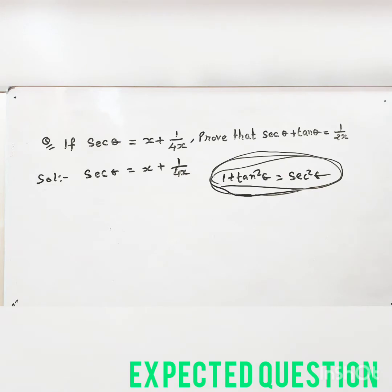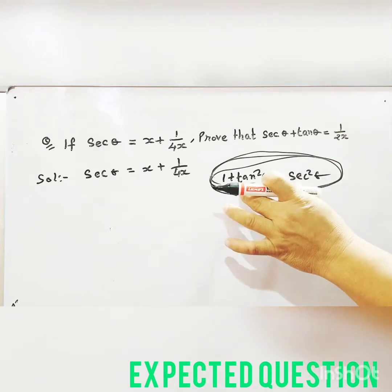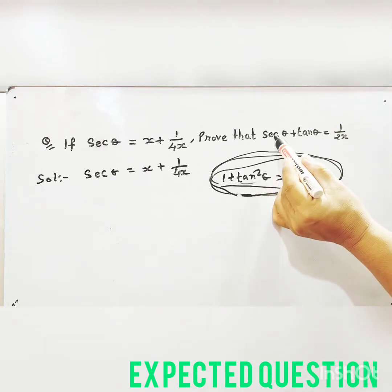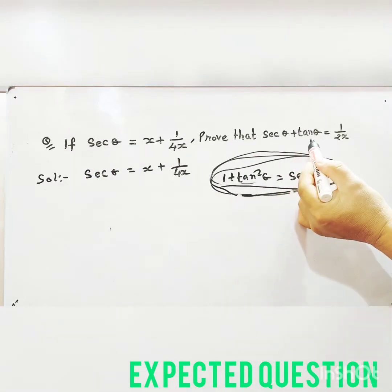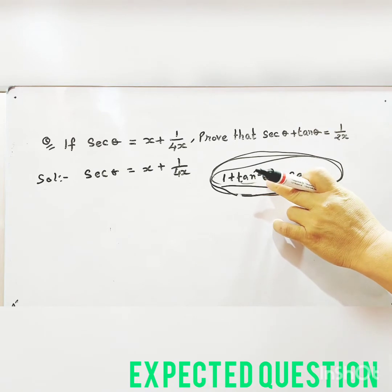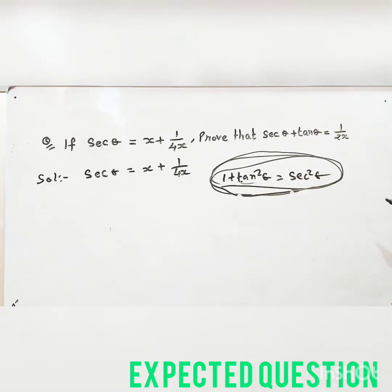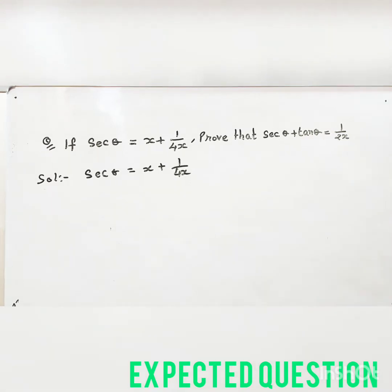So we have to use this identity: 1 plus tan square theta is equal to sec square theta. This identity is suitable for this question because it contains both sec theta and tan theta. We need to find sec theta and tan theta so that we can get 1 by 2x.